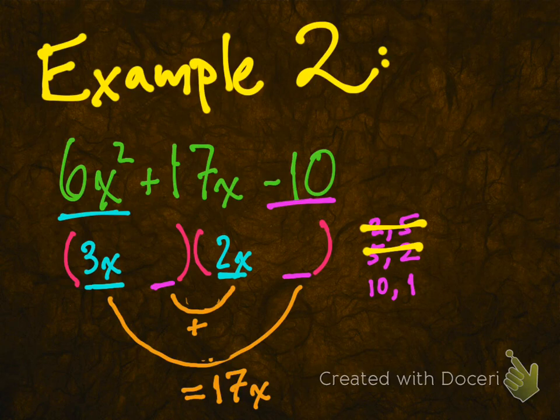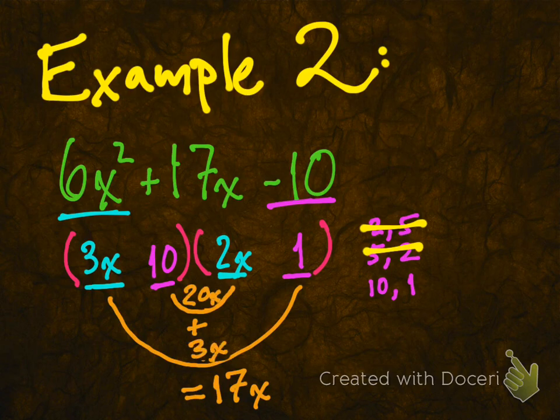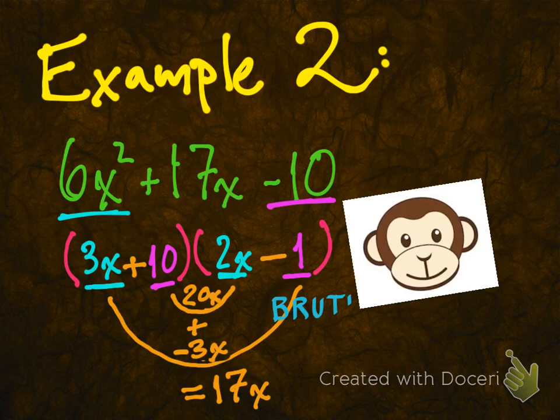Well, I think you can probably guess right along with me there that it's going to make more sense to try it at least with the 2. That'll be 10 and 1 there. That's an inner product of 20 and an outer product of 3. Remember, one of them's negative. Which one has to be negative. It's the 3. So that means it's 2x minus 1 over there and 3x plus 10. Ta-da! Brute Force Monkey Face!